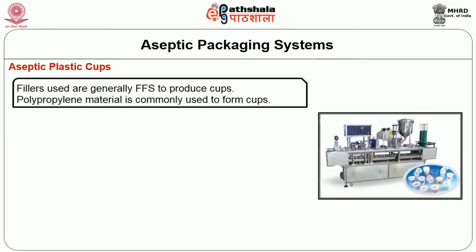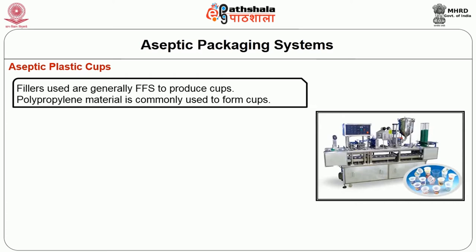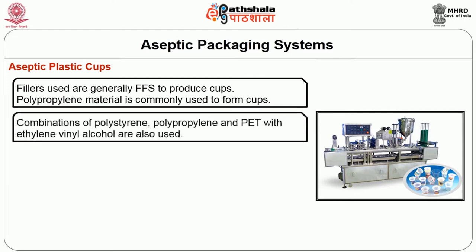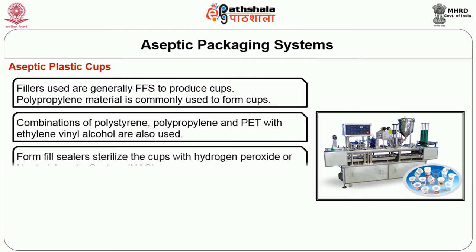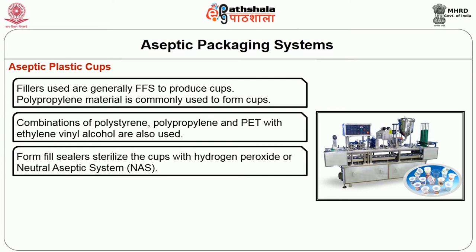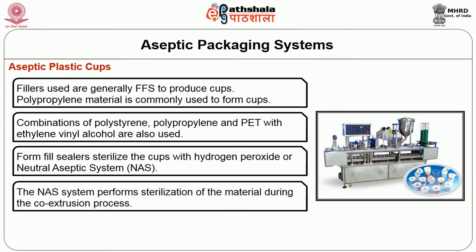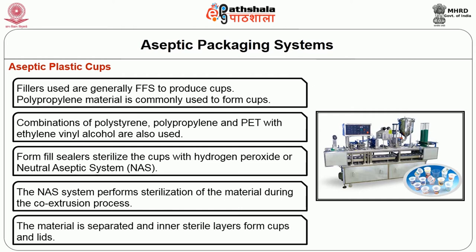The other type of packaging system is aseptic plastic cups. Fillers used are generally form-fill-seal to produce cups. Polypropylene material is commonly used to form cups. Combinations of polystyrene, polypropylene and PET with ethylene vinyl alcohol are also used. Form-fill-sealers sterilize the cups with hydrogen peroxide or neutral aseptic systems. The neutral aseptic system performs sterilization of the material during the co-extrusion process.